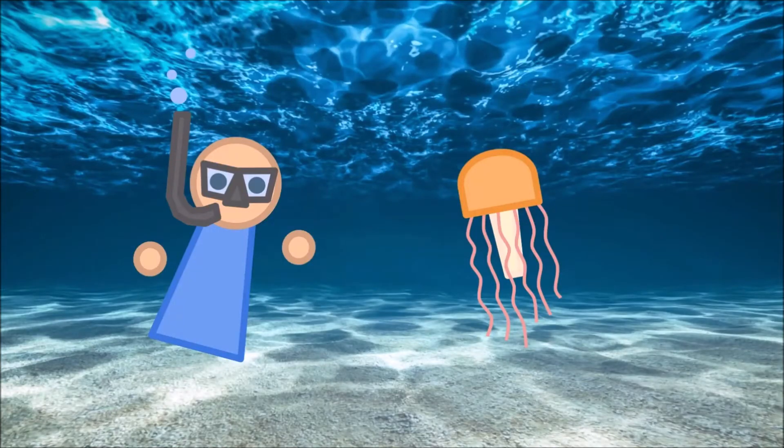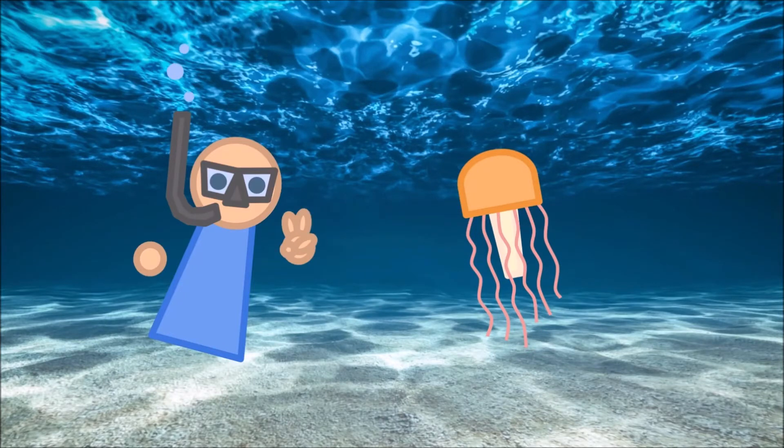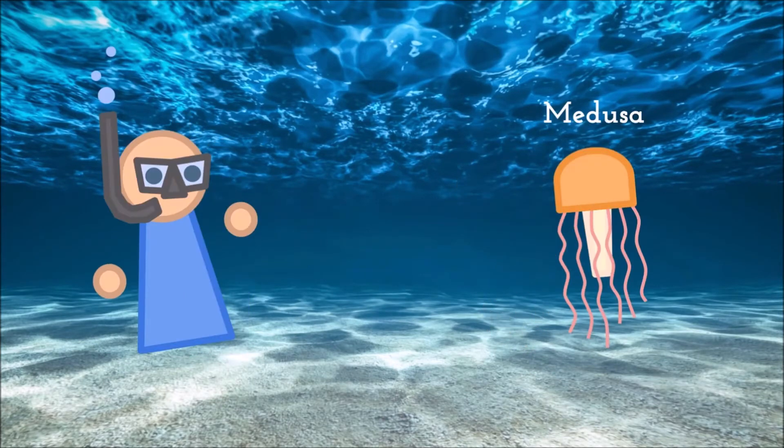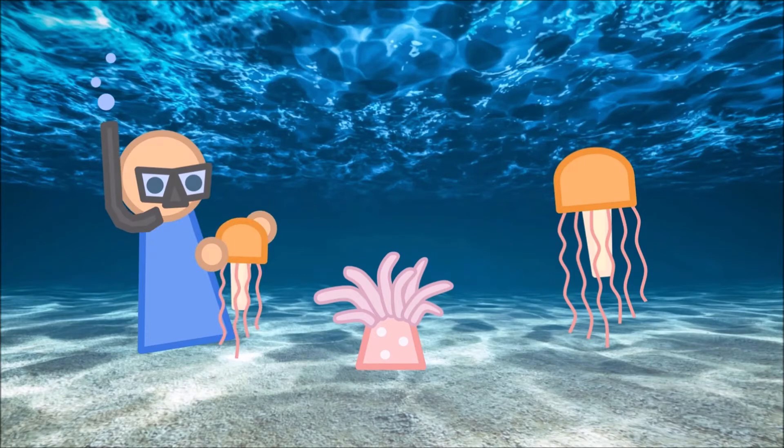Moving on to our next phyla, but staying underwater, we have our cnidarians, which you would probably know best as jellyfish, but they actually come in two body forms, the free-floating, mouth-down medusa, and the anchored, mouth-up polyp. The big step here is their possession of true tissues. Cnidarians have cells that work together to carry out very specific functions. They have tissue because they are diploblastic, caused by the blastula folding in on itself during embryonic development to form a gastrula, which then differentiates into the endoderm and ectoderm.